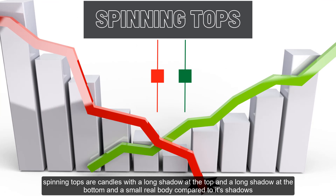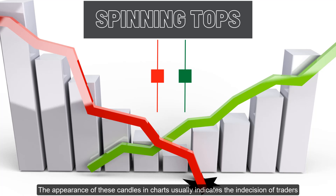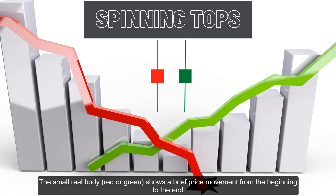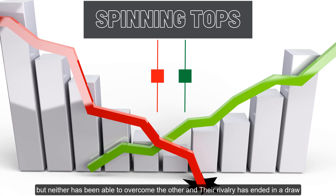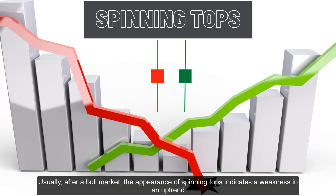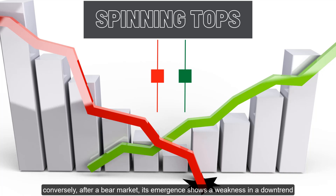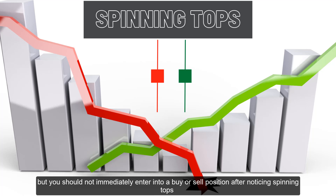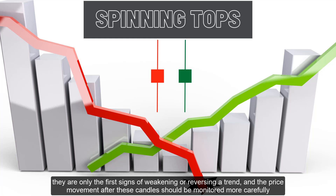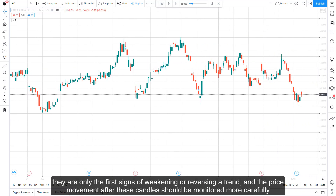Spinning tops are candles with a long shadow at the top and a long shadow at the bottom, and a small real body compared to their shadows. The appearance of these candles in charts usually indicates the indecision of traders. The small real body, red or green, shows a brief price movement from the beginning to the end, and the long shadows indicate that both buyers and sellers have been active during that period, but neither has been able to overcome the other. Usually after a bull market, the appearance of spinning tops indicates a weakness in an uptrend, and conversely, after a bear market, its emergence shows a weakness in a downtrend. But you should not immediately enter into a buy or sell position after noticing spinning tops — they are only the first signs of weakening or reversing a trend, and the price movement after these candles should be monitored more carefully.